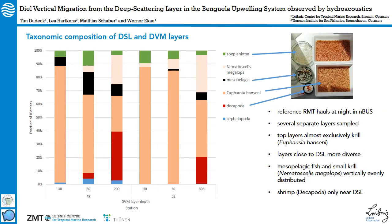We also wanted to look at the taxonomic composition of the deep scattering layer and the layers formed during vertical migration. Unfortunately, we were only able to conduct six hauls at two stations in the northern Benguela subsystem during the night. We managed to sample several separate layers, for example at 30 meters depth, 80 meters depth, 200 meters, and at the other station 30, 50, and 306 meters depth, which is basically the deep scattering layer. What we found was that there's quite a difference in composition of these layers.